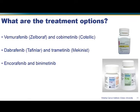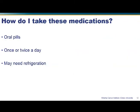How do you take these medications? Some patients absolutely love this — they're oral pills, so you don't have to come into the infusion center for an infusion. You still have to come see us every few weeks so we can check how you're doing and check your labs, but they are oral pills, which many patients really appreciate. Depending on whether it's the BRAF inhibitor or the MEK inhibitor, you take them either once or twice a day. Some of the medications may need refrigeration, which is important to consider if you're traveling.